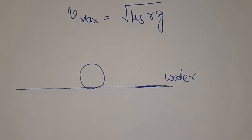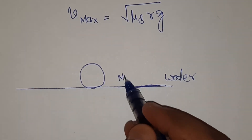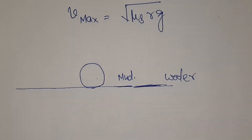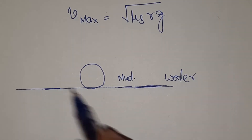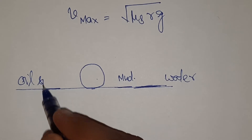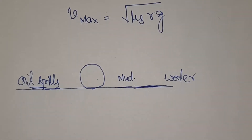If there is an accident, it may happen that mud pieces come onto the road. Mud also will reduce the friction. Oil spilling on the road will also reduce the force of friction between tyre and road.